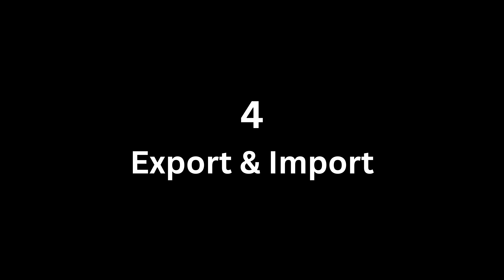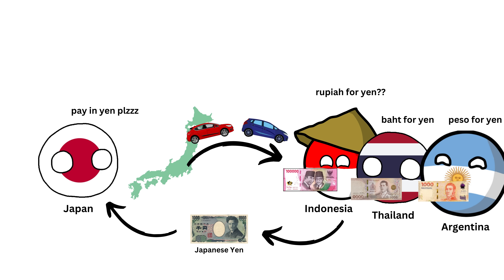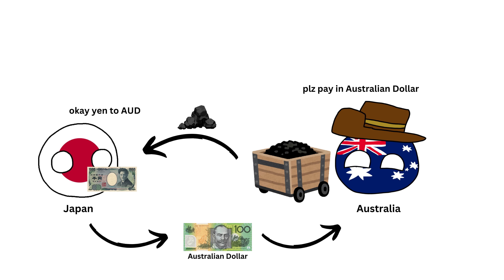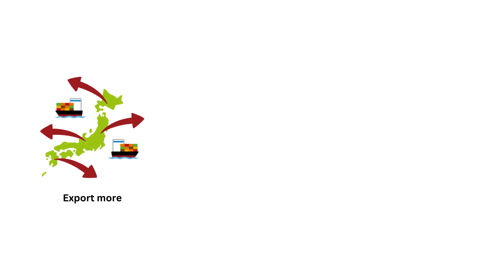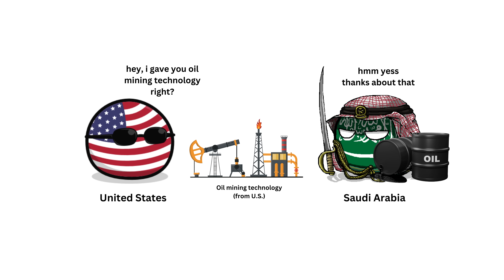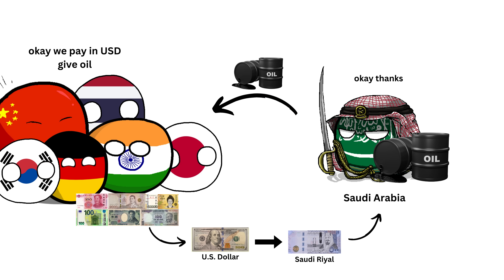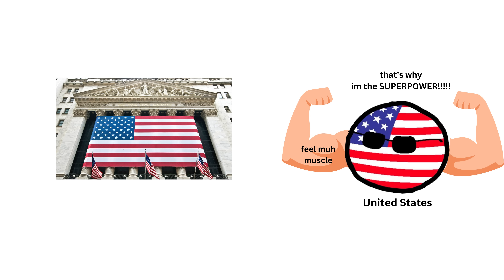Section 4: Export and Import. When Japan exports cars to other countries, those countries need to use Japanese yen to buy the cars. This makes the yen high in demand. If Japan imports coal from Australia, they need to use Australian dollars to buy the coal, which increases demand for the Australian dollar. Most countries try to export more so that others need to buy their currency, making it stronger. For example, when the U.S. convinced oil-producing countries like Saudi Arabia to sell oil only in U.S. dollars, it made the U.S. dollar highly in demand. Since almost all countries need oil, they have to get U.S. dollars to buy it. This made the U.S. dollar a global currency, strengthening the U.S. economy and influence as the number one in the world.